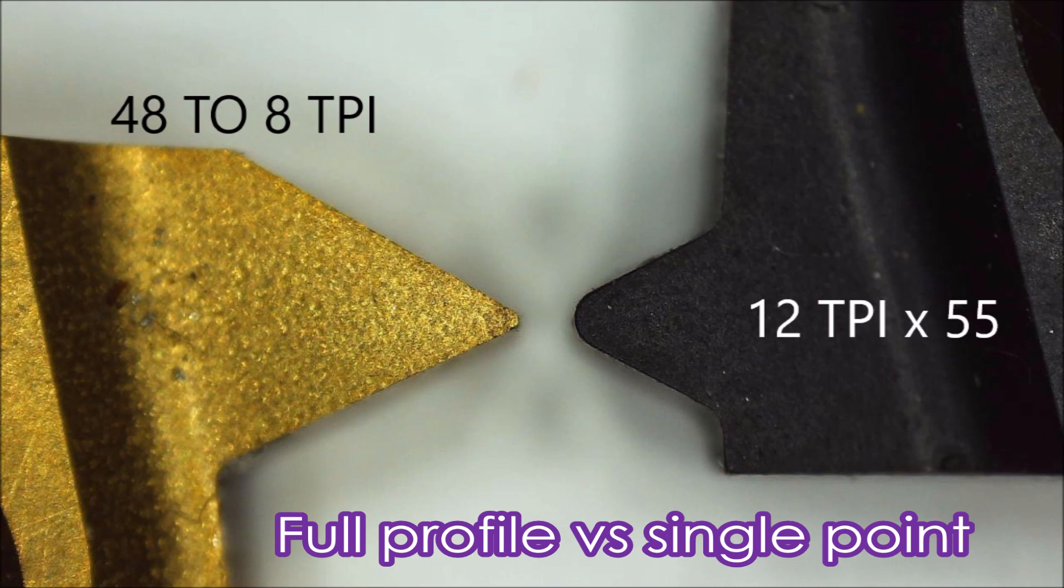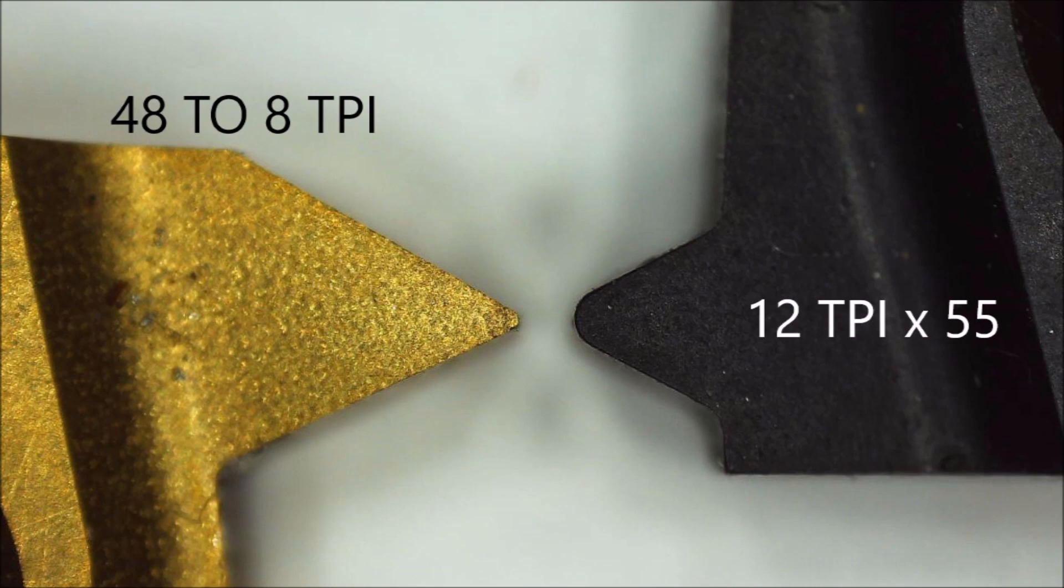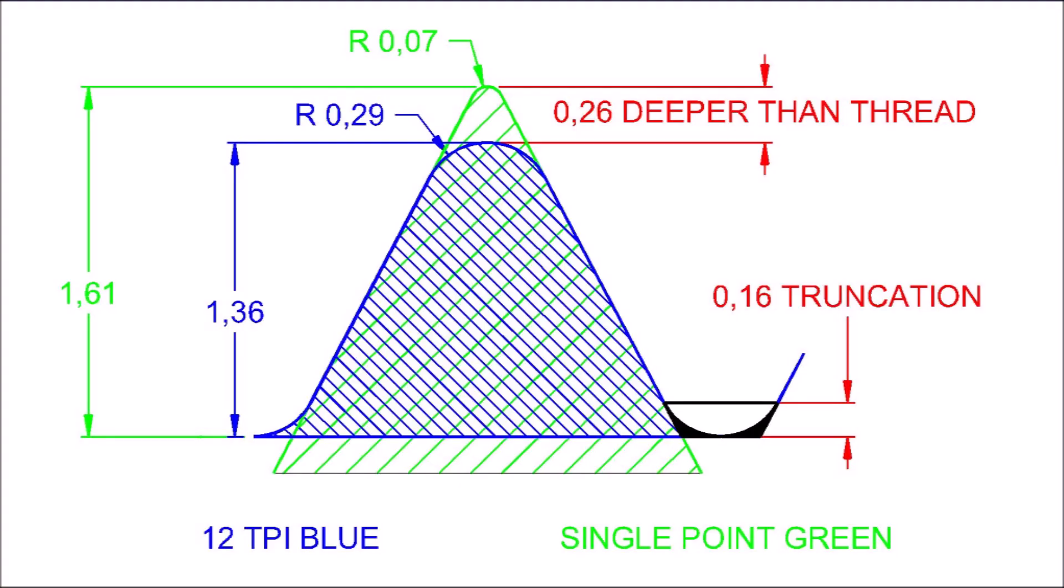So I thought I'd take this opportunity to lay one over the other. As you can see here, you can see how much deeper you have to cut the thread if you're using a single point tool compared with a full form insert.